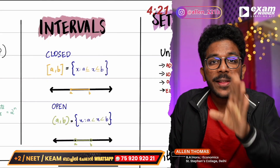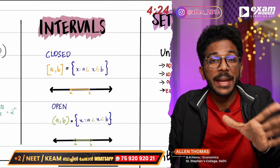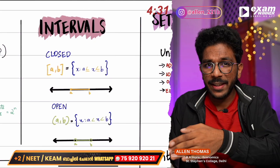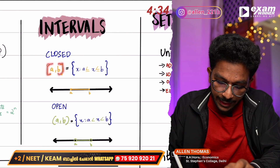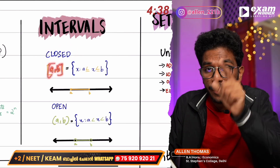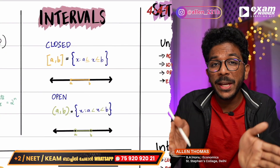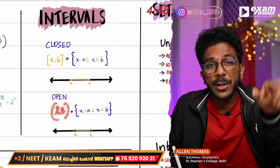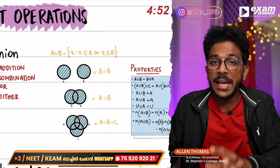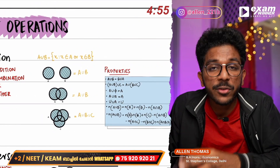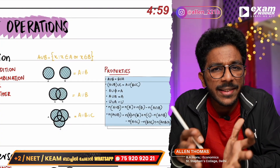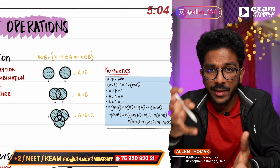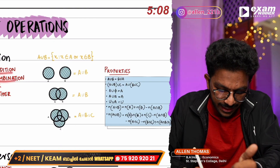Now let's discuss intervals. An interval is a way to represent a set on the number line. There are different types of intervals — open, closed, and half-open. In this situation, the combination covers a range of values.